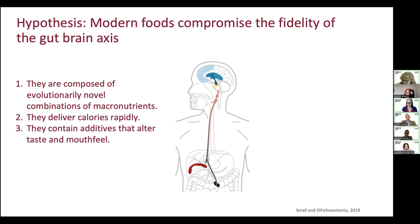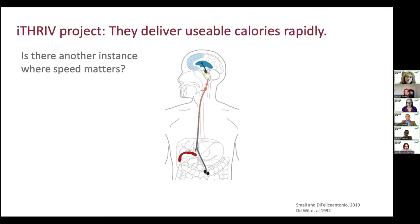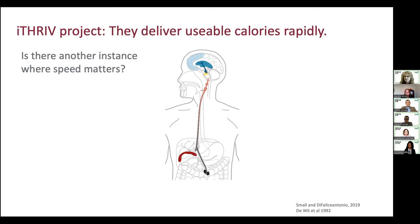My I-THRIVE project focused on the second hypothesis. We know ultra-processed foods are simply consumed more quickly. The only randomized control trial to date on ultra-processed foods showed people ate more quickly and gained more weight on an ultra-processed diet. There's also evidence that these foods' calories are divorced from their food matrix — they're more bioaccessible, easier to digest. Think about whole grain bread versus white bread: those white bread calories are more accessible.